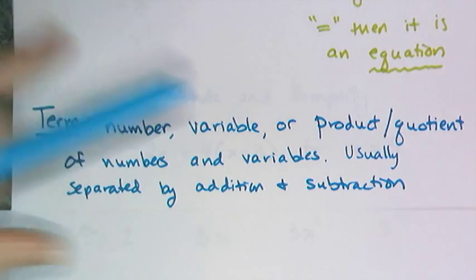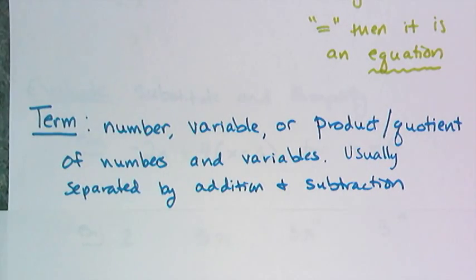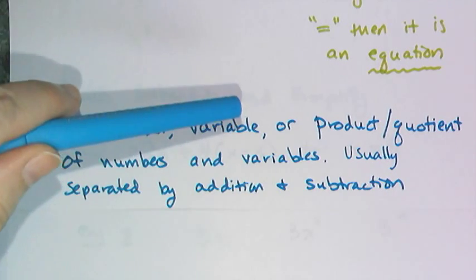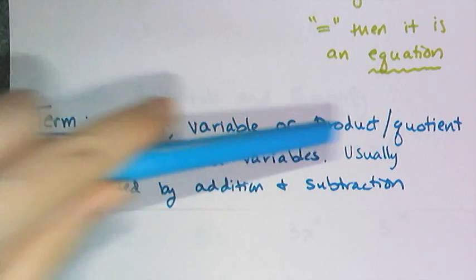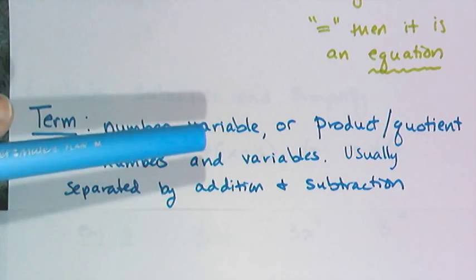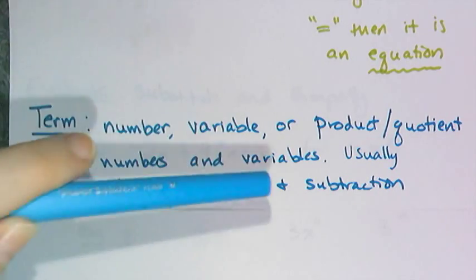One important word that you're going to see quite often all throughout algebra is the word term. A term can be just a number, it could be just a variable, or it could be the product or quotient of numbers and variables. They are usually separated by addition or subtraction.